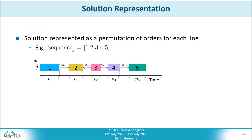An important aspect of each metaheuristic optimization algorithm is the representation of the solution. In our case, we represent the solution as a permutation of orders for each line, which corresponds to the sequence in which the orders are processed on the specific line. From this information, alongside the processing times for all orders and the changeover time between different orders, a schedule can be computed.